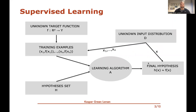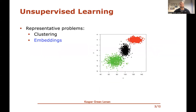In many of the previous videos we've been looking at supervised learning, where we have this unknown target function. There's some input distribution that generates training examples, and these training examples are fit into a learning algorithm that produces a hypothesis supposed to look a lot like this unknown target function. This has been the focus so far.